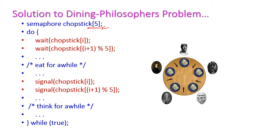The control enters into the do loop. Here, 2 wait operations are there — the first wait is for the first chopstick and the second wait is for the next chopstick. For example, if the second philosopher tries to take the chopsticks, he has to hold the first chopstick and the second chopstick. After taking these 2 chopsticks, he will eat for a while. After completing eating, he will keep the chopsticks on the table; otherwise, he continuously holds the chopsticks. Once he finishes eating, the signal operation will be performed for both chopsticks, then he puts down the chopsticks on the table and starts thinking again.